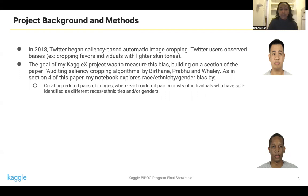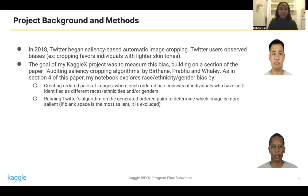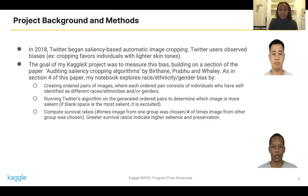As in section 4 of this paper, my notebook explores race, ethnicity, and gender bias by creating ordered pairs of images, such as the one you can see on the right, where each ordered pair consists of individuals who have self-identified as different races, ethnicities, and/or genders. I then run Twitter's algorithm on the generated ordered pairs and determine which image is more salient, i.e., which is more attention-grabbing and favored by Twitter's model. And I compute survival ratios.